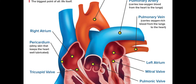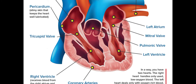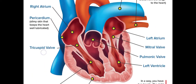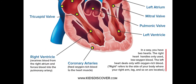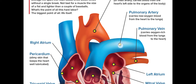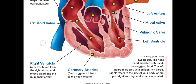We have the tricuspid valve, which prevents the backflow of blood. The right ventricle receives blood from the right atrium and forces blood into the pulmonary artery. Blood flows from the right ventricle through to the pulmonary artery. There is also a pulmonary valve, which prevents the backflow of blood back into the right ventricle.